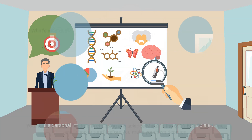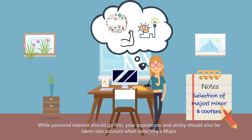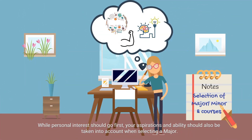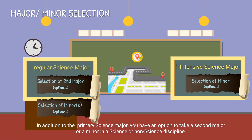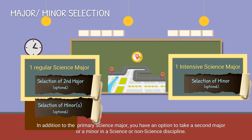While personal interest should go first, your aspirations and ability should also be taken into account when selecting a major. In addition to the primary science major, you have an option to take a second major or a minor in a science or non-science discipline.